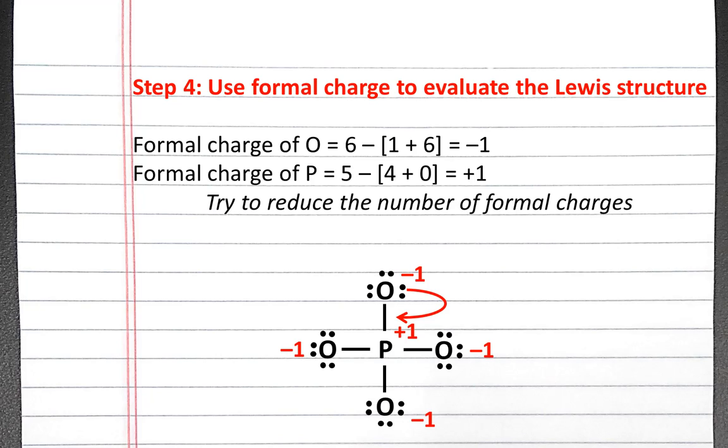If we create a double bond between phosphorus and oxygen using one of the lone pairs on one of the oxygens, then we can change what the formal charge is on both oxygen and phosphorus.